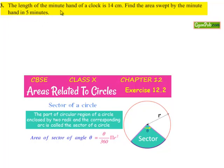Coming to the third question: the length of the minute hand of a clock is 14 cm. Find the area swept by the minute hand in 5 minutes.